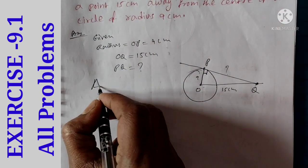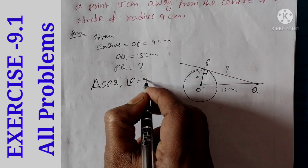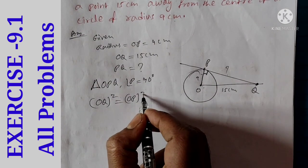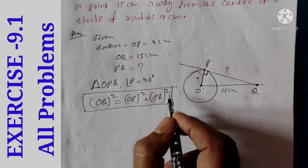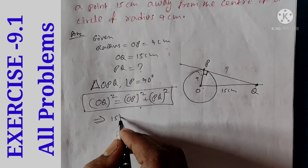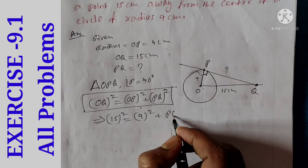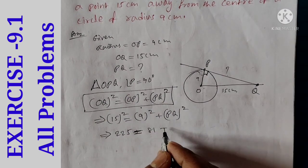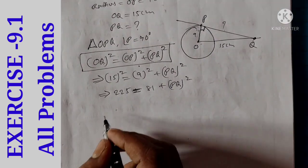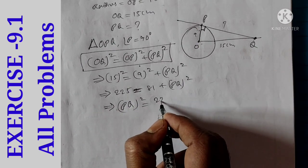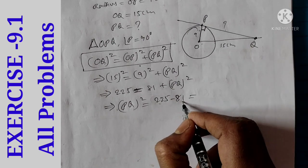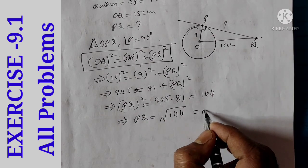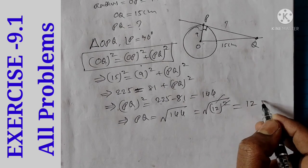In triangle OPQ, angle P is equal to 90 degrees — right angle triangle. By Pythagoras theorem: hypotenuse squared equals opposite side squared plus adjacent side squared. OQ is 15 squared. OP is 9 squared. So 225 equals 81 plus PQ squared. PQ squared equals 225 minus 81 equals 144. PQ equals square root of 144, which equals square root of 12 squared. Square root cancels — so PQ is 12 cm.